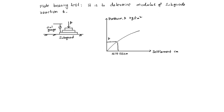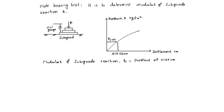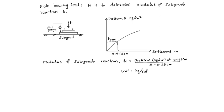The modulus of subgrade reaction K is equal to the pressure P at 0.125 centimeter settlement divided by that settlement. The pressure is in kg per centimeter square, so the units of K are kg per centimeter cube.